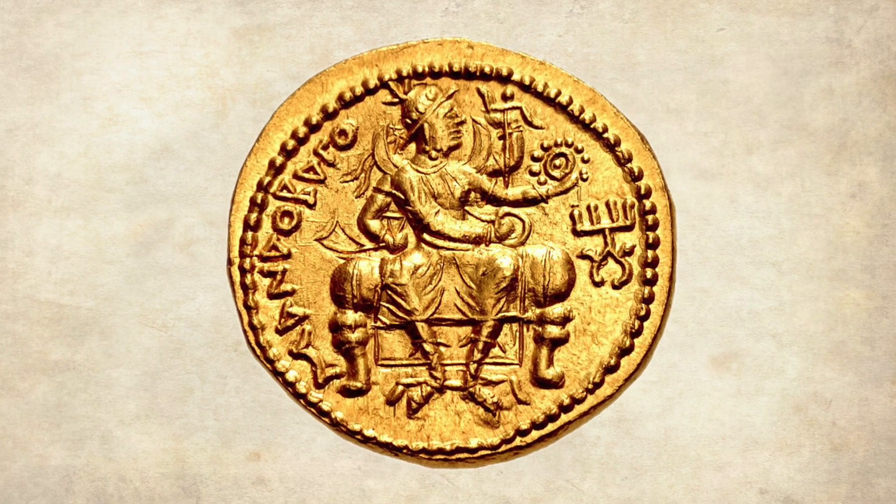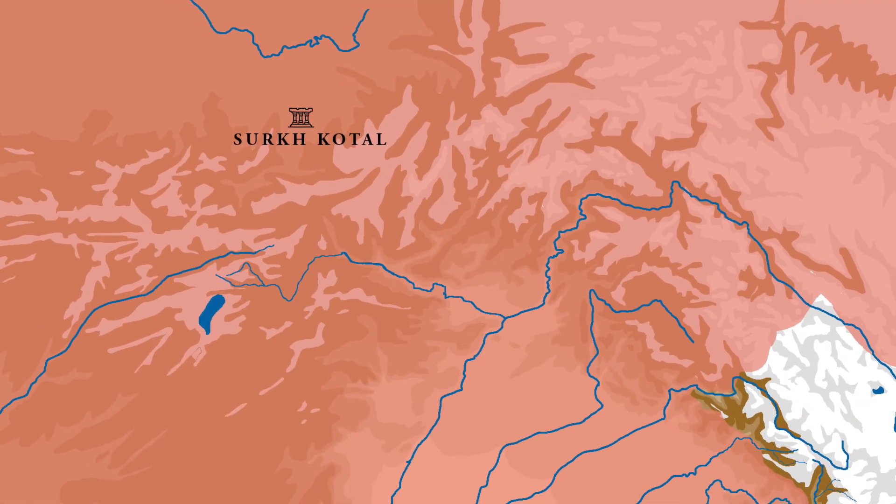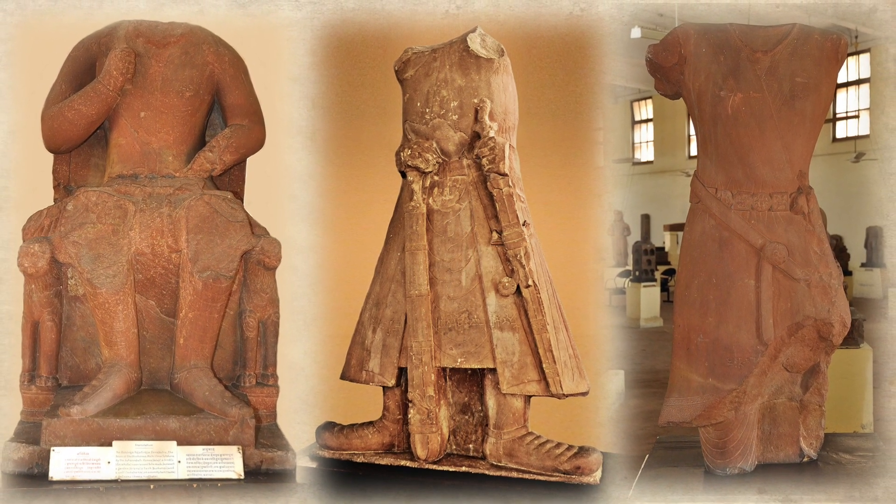Coming back to the question of Kanishka's religion, most scholars argue that Kushan emperors in general followed the Iranian religion, as seen in the various coins depicting Iranian gods and goddesses. Apart from Iranian religion, Kushan kings also promoted the worship of their predecessors and of themselves. This belief in the divinity of kings is seen in two devakulas — one found in Surkhotal in Afghanistan and another in Mathura — where statues and inscriptions indicate that Kushana kings were worshipped as divine beings.